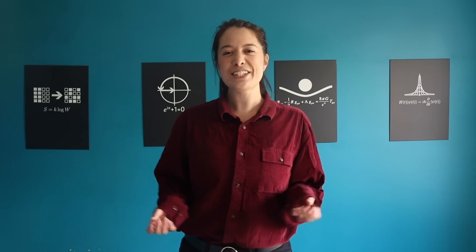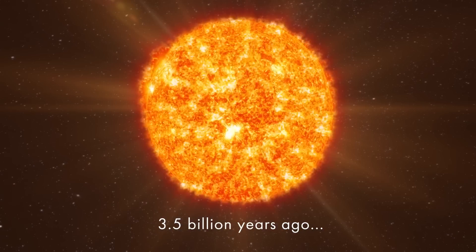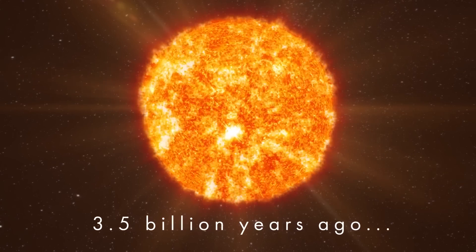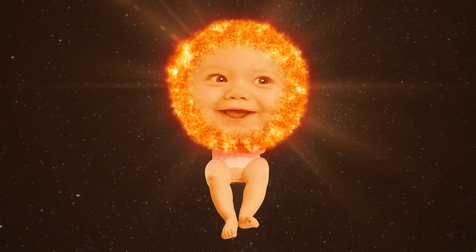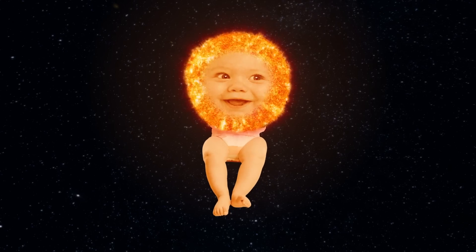It naturally follows then that billions of years ago the sun was dimmer. Let's jump back about 3.5 billion years. On cosmic timescales our sun was just a baby shining at only about three quarters of the brightness it is today.